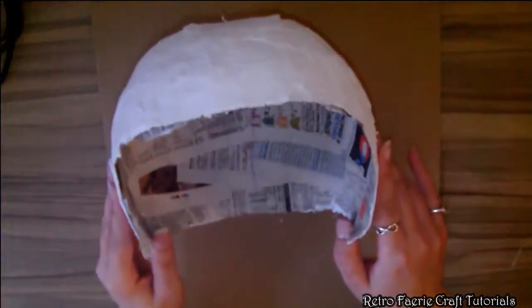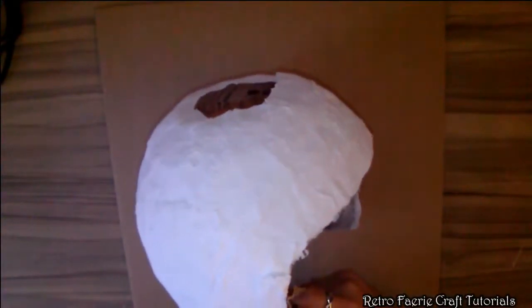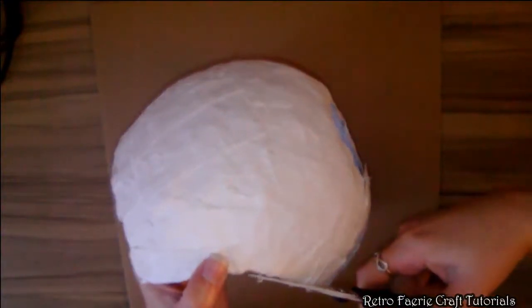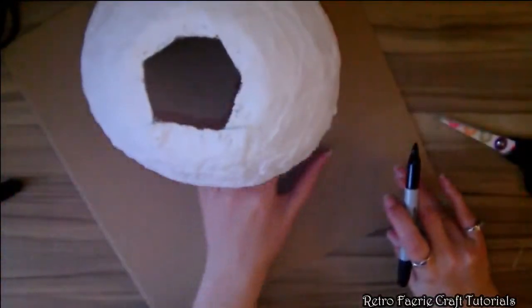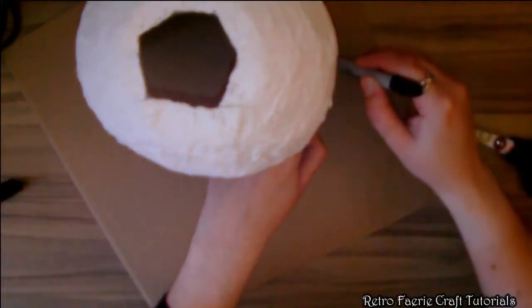This is what it looks like when it's dried. I popped it off the bowl and because I covered it in the plastic wrap it popped off quite easily. I'm just going to trim up the ends, make them so they're nice and neat before I do more to it. Then I've got some cardboard, I'm just going to draw around the bottom.